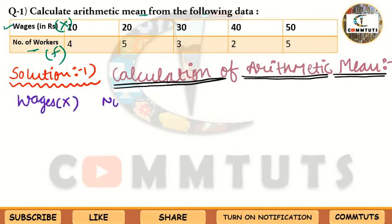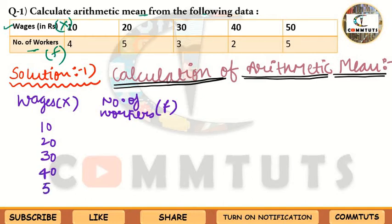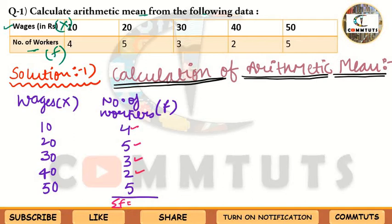Write 'Calculation of Arithmetic Mean' at the top, then write the columns: Wages (X) and Number of Workers (F). The wage values are 10, 20, 30, 40, and 50. The number of workers are 4, 5, 3, 2, and 5. Now add the frequencies: 4+5=9, 9+3=12, 12+2=14, 14+5=19. So ΣF = 19, which is your total number of observations N.